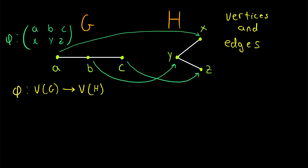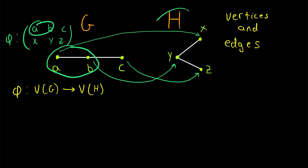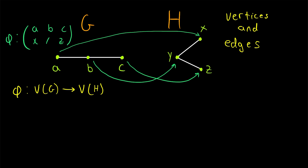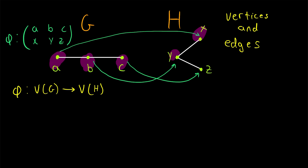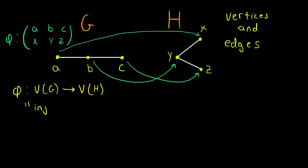We're not quite done formalizing this relationship yet. The function phi from the vertices of G to the vertices of H needs to have a few special properties. Firstly, no two vertices in G should be mapped to the same vertex in H. For example, we couldn't have the function send both A and B to the vertex X — that wouldn't capture the idea of these graphs having the same structure. Each distinct vertex of G should be matched to a distinct vertex of H. This is called an injective function.